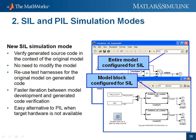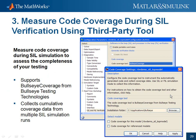Moving on to code verification features, the software-in-the-loop and processor-in-the-loop simulation modes have been updated. You can now run software-in-the-loop testing for your entire model, and also for individual subsystems using the model block. There is no need to modify your model, and you can reuse the test harness from the original model on the generated code. When verifying your algorithm, it is also important to measure code coverage during SIL code simulation. You can now do this using third-party tools such as Bullseye Coverage from Bullseye Testing Technologies, which supports collecting cumulative coverage data from multiple software-in-the-loop simulation runs.